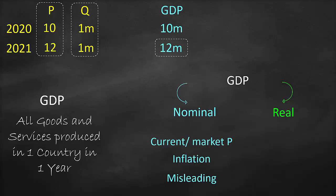But in reality, this higher nominal GDP comes from higher prices, not higher quantity. Therefore, nominal GDP would be misleading. And every time we look at GDP as reported, it's nominal. Therefore, we need to convert our nominal GDP into real GDP.